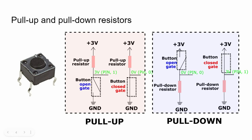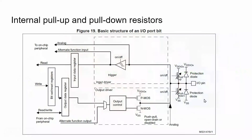When using a button, you should know that STM32 microcontrollers have internal pull-up and pull-down resistors. So instead of connecting an external resistor to your hardware, you can simply use the internal pull-up or pull-down resistor by writing a piece of code.